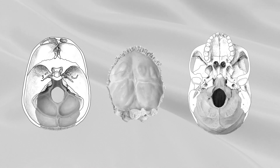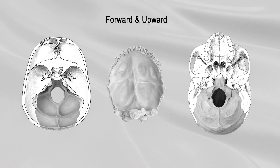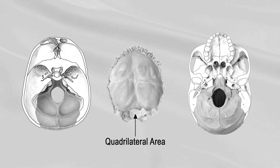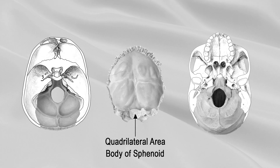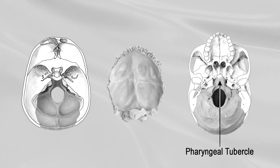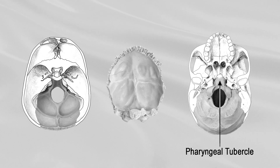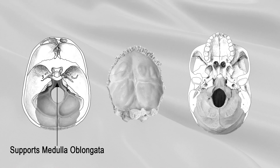The basilar part extends forward and upward from the foramen magnum. It presents in front a quadrilateral area which is joined to the body of the sphenoid. The lower surface presents the pharyngeal tubercle, about one centimeter in front of the foramen magnum. The upper surface presents a broad, shallow groove which supports the medulla oblongata.